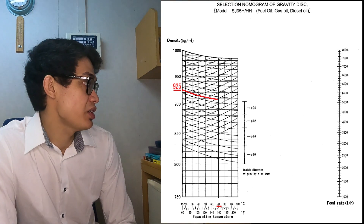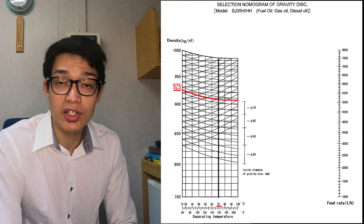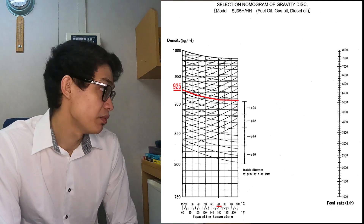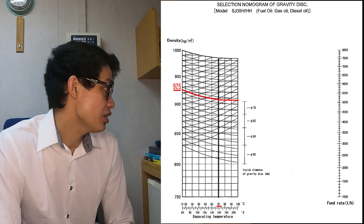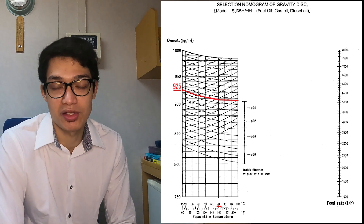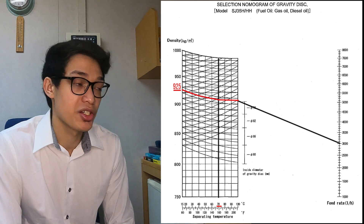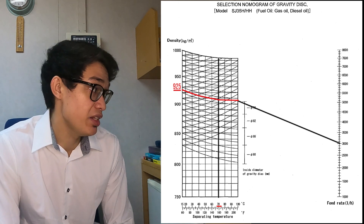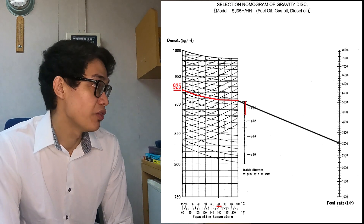From that intersection, we draw a horizontal line until it reaches the vertical line at 100 degrees Celsius. Then we connect the second intersection and the point of the given feed rate — 3,000 liters per hour — using a straight line. With the intersection made by the gravity disk section on that third line, we can now read the correct gravity disk for the given oil, which is 78.